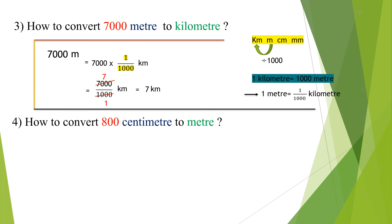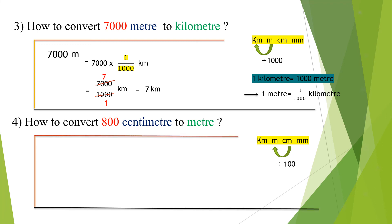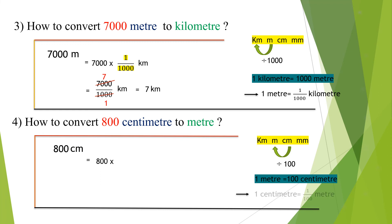How to convert 800 cm to m? To convert cm to m, divide the cm length value by 100. 800 cm is equal to 800 × (1/100) m, that is 800 divided by 100. We know that 1 m is equal to 100 cm, so 1 cm is equal to 1/100 m. 100 eights are 800, so we get 8 meters.